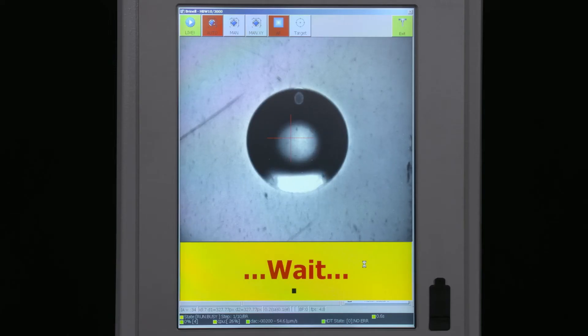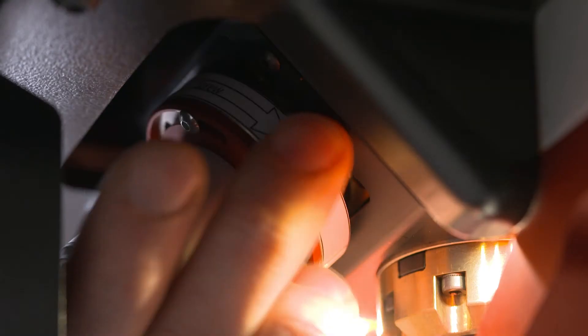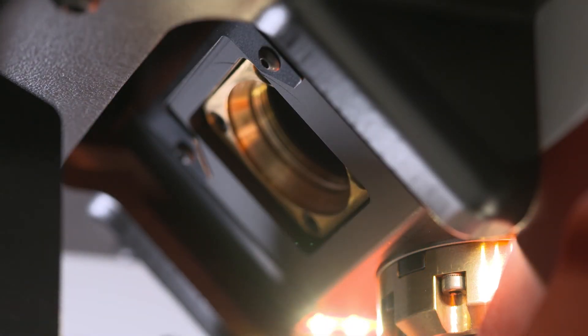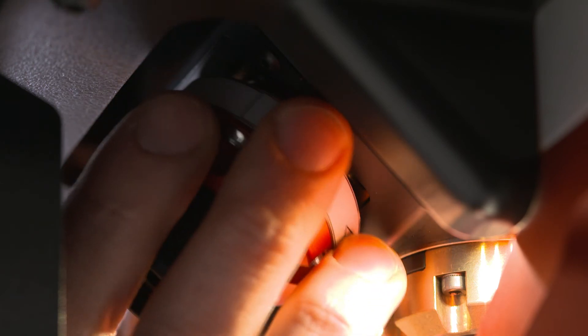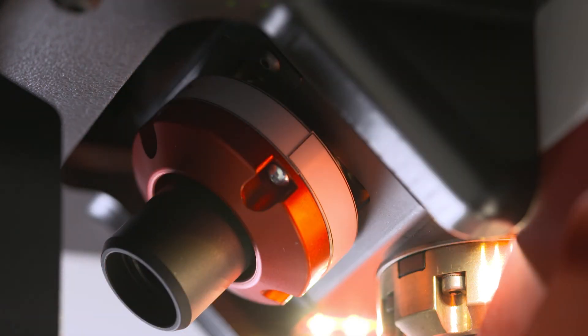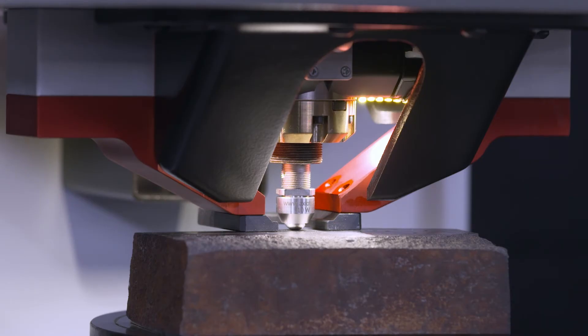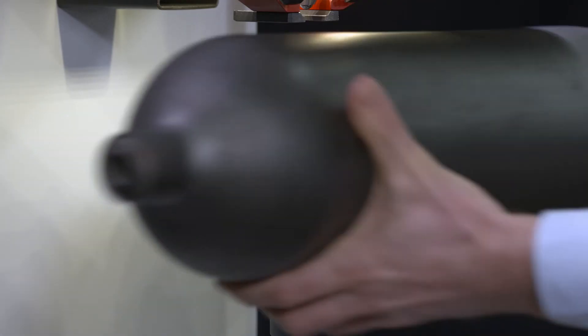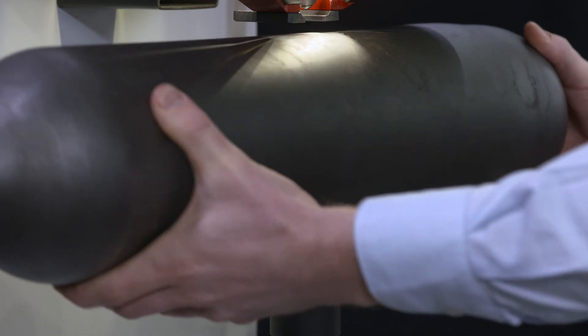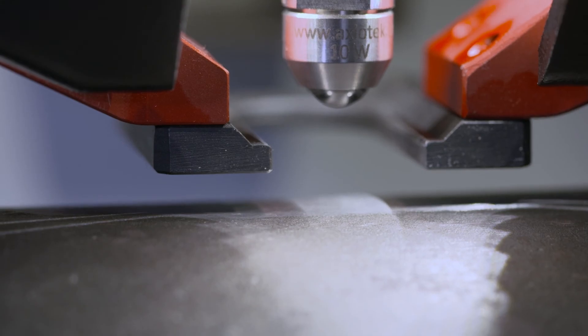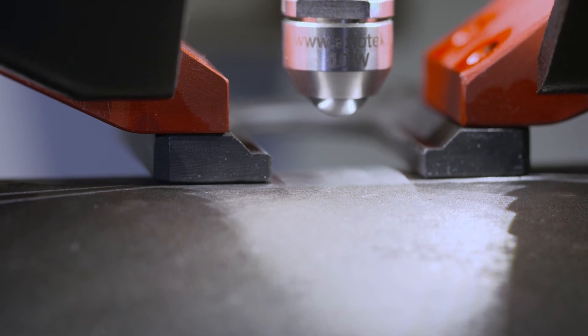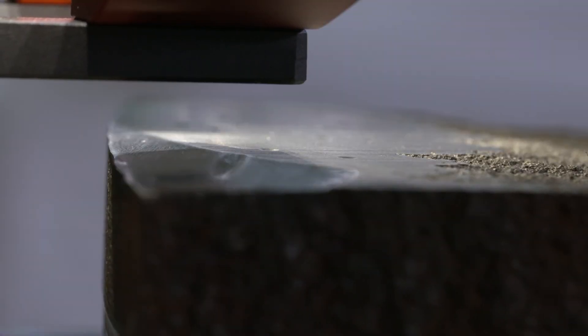AFRI's proprietary image analysis for indentation reading and the autofocus system eliminate any variables. The clamping system holds the sample in place prior to testing, ensuring perpendicularity and stability during testing. Extremely precise results can be obtained even on unbalanced or heavy pieces.